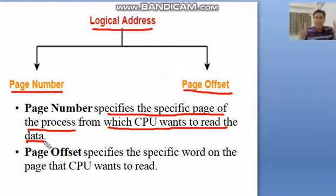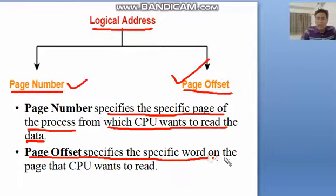Page number, you can generate a page number and you can use the page number for the remaining bits. Page offset specifies the specific word on the page that CPU wants to read.